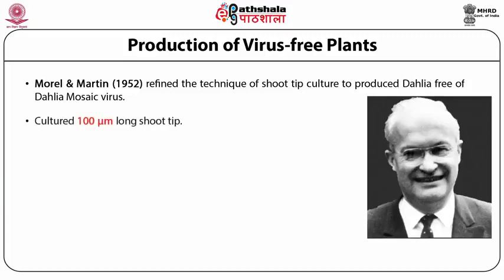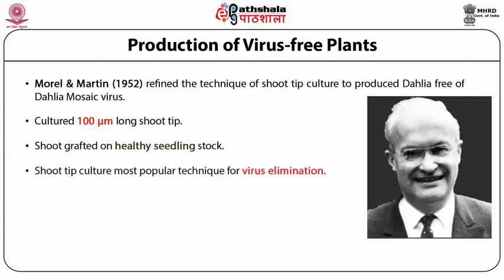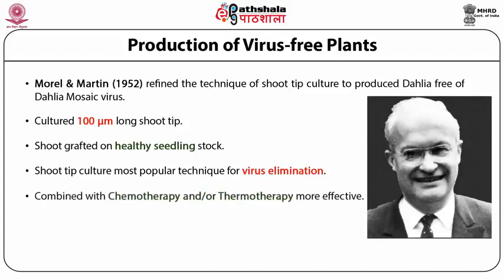Morrill and Martin cultured 100 micrometer long shoot tips. When these developed into shoots, unfortunately the shoots did not root. Therefore, to obtain full plants they had to graft the shoot onto a healthy seedling stock. Since then, shoot tip culture has become the most popular technique for virus elimination in plants, and combined with chemotherapy and/or thermotherapy it is even more effective in certain cases.